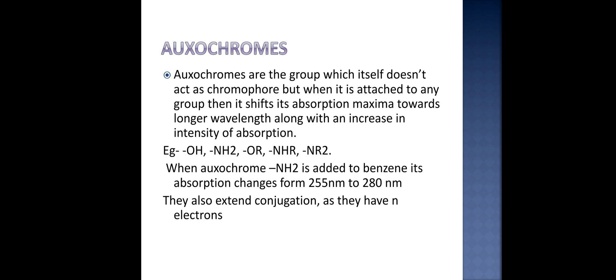Now auxochromes. Auxochromes are the groups which itself doesn't act as a chromophore, but when it is attached to any group then it shifts its absorption maxima towards longer wavelengths along with an increase in the intensity of absorption. Examples include hydroxyl group, amino group, ketone group, amine group, primary and secondary. When an auxochrome amine is added to benzene, its absorption changes from 255 to 280 nanometers. They also extend conjugation as they have n electrons.